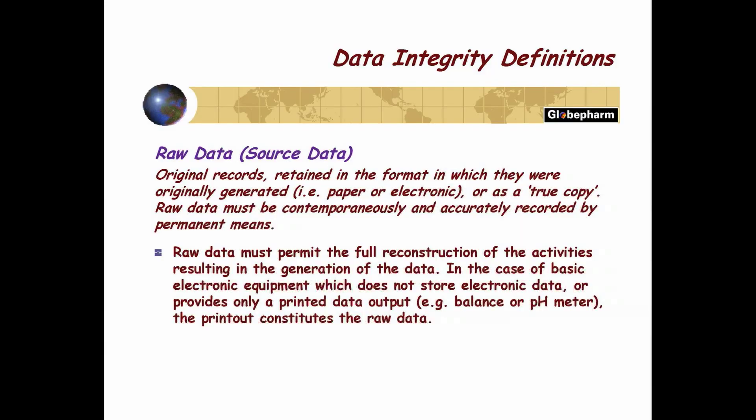Raw data must permit the full reconstruction of the activities that generated it. For basic electronic equipment that does not store data or provides only a printed output, the printout constitutes the raw data. But for HPLCs, GCs, and UVs, the printout is not the raw data — no matter what your SOP says. I've been to places where the SOP states the printout is the raw data. That's fine internally, but it's not acceptable to the authorities. The raw data is the first capture point.